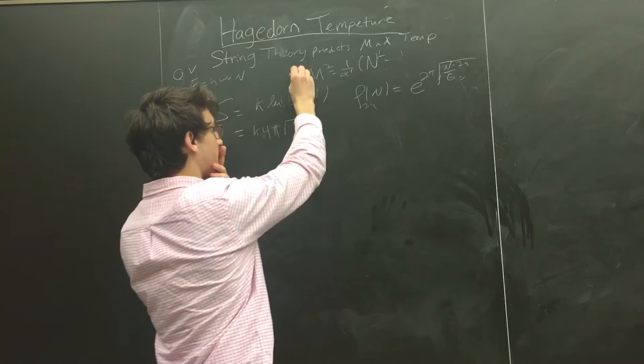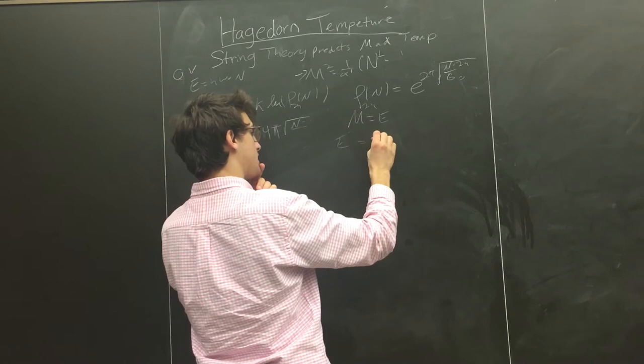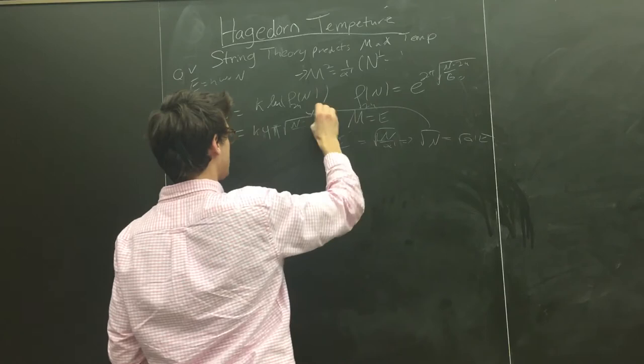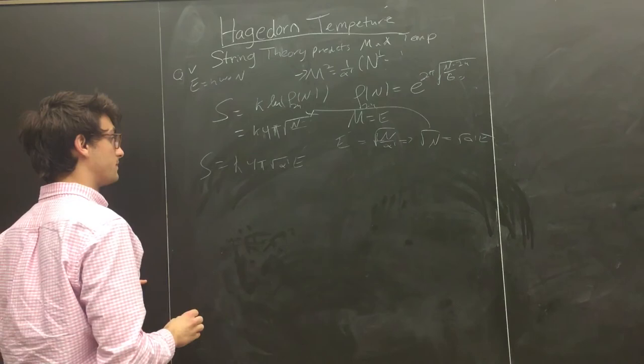n equals E, we get E squared. We get E equals square root of n over alpha prime. So n square root of n equals alpha prime E. Plug this into here, we get the entropy equals k 4 pi, and then alpha prime E.